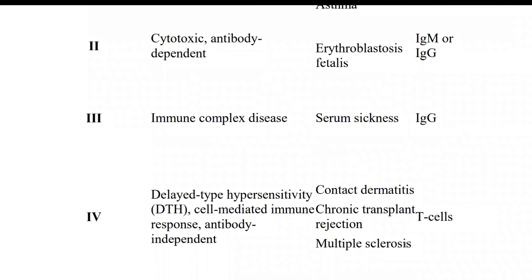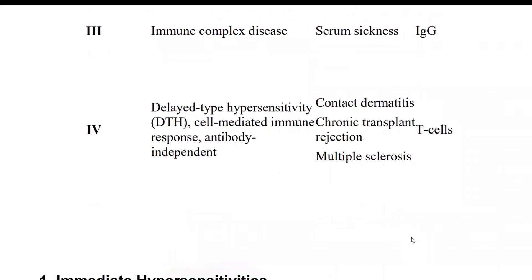Type 4 hypersensitivity is also called delayed type hypersensitivity (DTH) or cell-mediated immune response. It is antibody-independent - your immune system gives this response without antibodies. The response is delayed, coming after six to seven days. The first disorder is contact dermatitis.